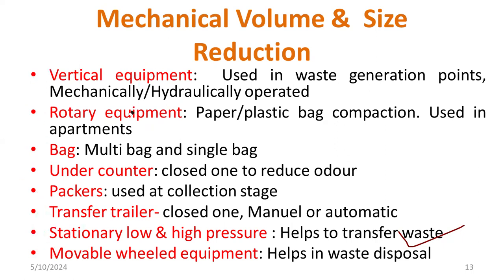There are different purposes for each device. Packers are mainly used for the collection stage. Under-counters are used to reduce odor. Bags include multi-bag and single bags. Rotary equipment is mainly for compaction of plastic bags, paper, and plastic. Movable wheel equipment is helpful for waste disposal.